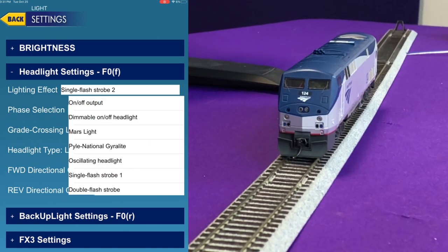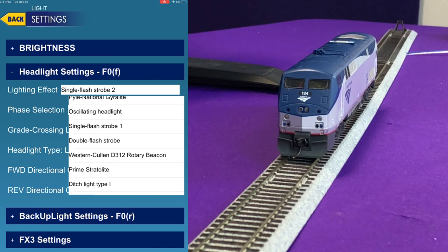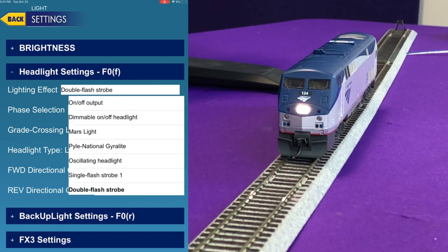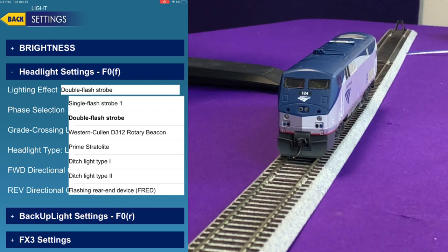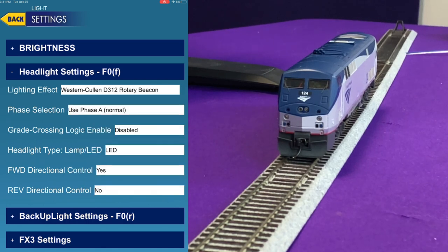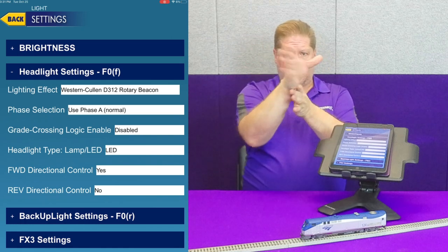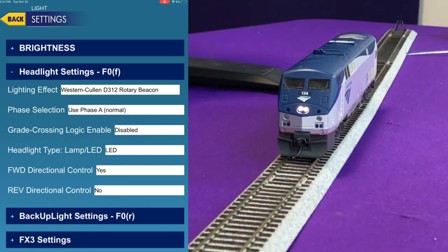Next is the double flash strobe — click it and you see the double release of photon lights. It works very similarly to single flash strobe except it creates a double pulse. After that we have the Western Cullen rotary beacon, where a reflector spins around the light bulb, shining the light around to catch your eye. There's just a single bulb and the reflector spins around it — usually located on top of the roof of a locomotive.